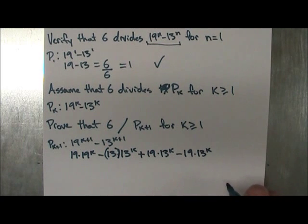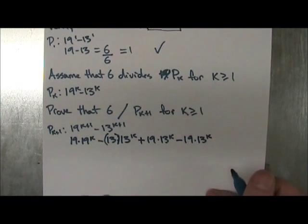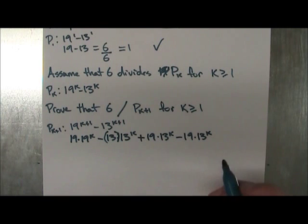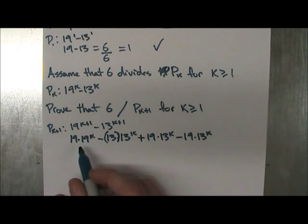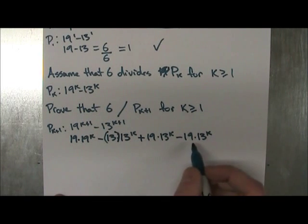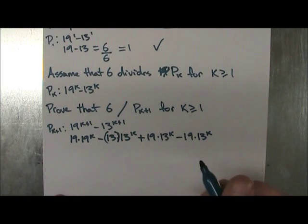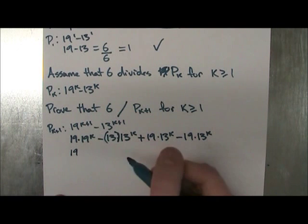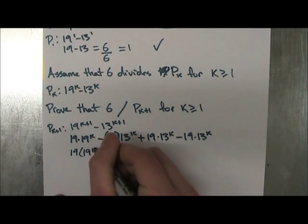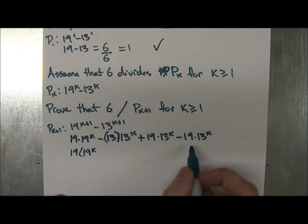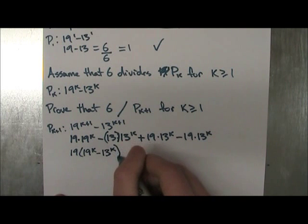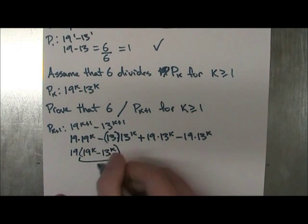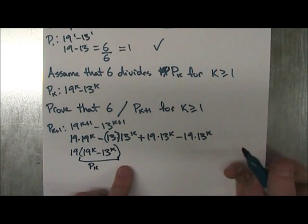Alright, so this is what's going to allow you to factor out your P_k. Okay, so you're going to take out all these 19s. So we have 19 times 19^k and then we're going to take this one and take out that minus 13^k. And right here, you can see that we have P_k. And let's see what else we got.